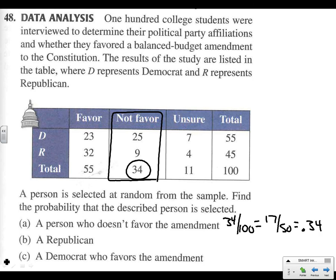What's the probability they're a Republican? We're going to look at the total for the Republican, that's 45 out of 100, which is 0.45, or 45% chance. And how about a Democrat who favors the amendment? Well, that's just here. There are 23 Democrats who favor it, so 23 out of 100, which is 0.23, or 23%.